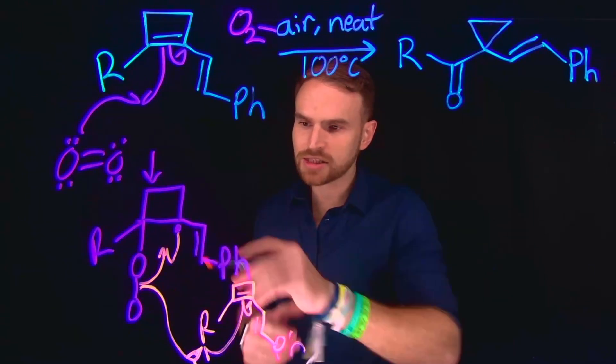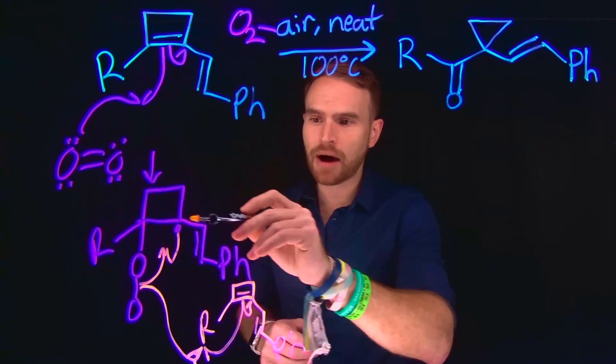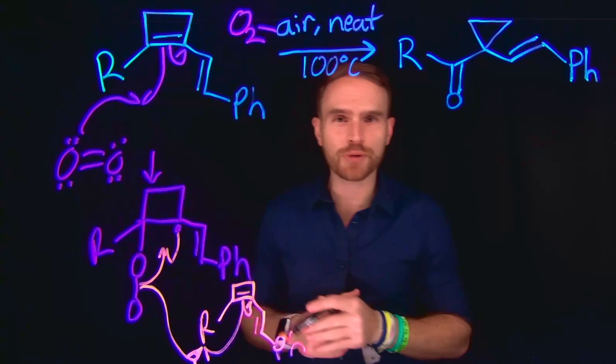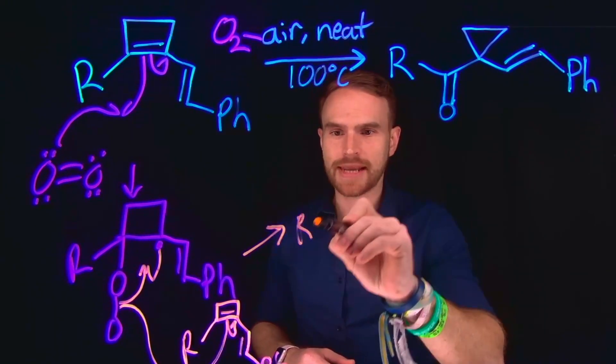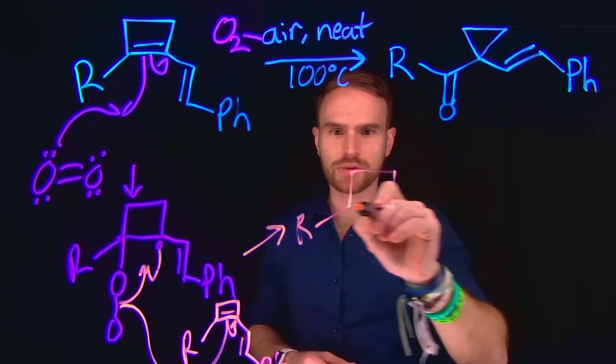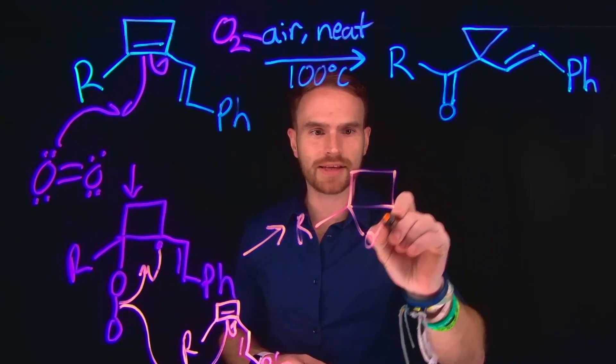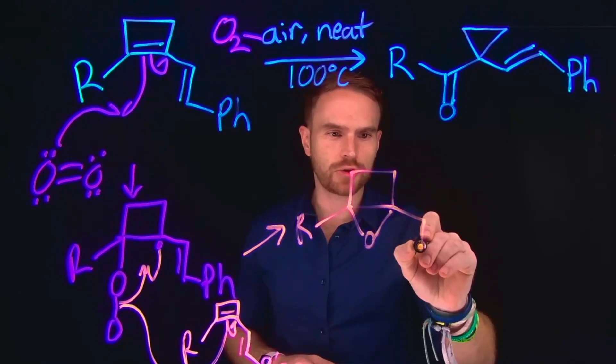Now in this step we broke this oxygen to oxygen bond and made an epoxide as a part of this cyclobutane ring. So the product of that transformation is now going to be still that cyclobutane with an epoxide at this position, and the rest of the molecule remains unchanged.